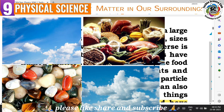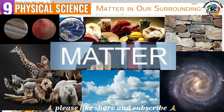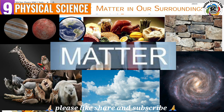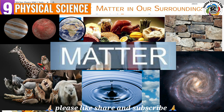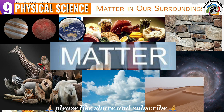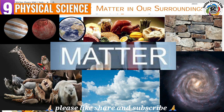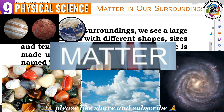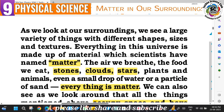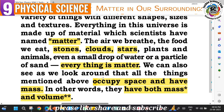Everything in our surroundings - for example, the air we breathe, the food we eat, stones, clouds, stars, plants, animals, every small drop of water, sand - all these are matter. Matter is made up of particles. Everything around us is matter. Matter occupies some space and has mass and volume.